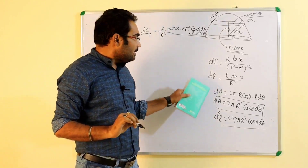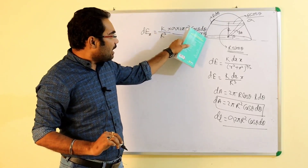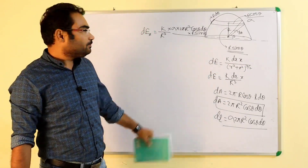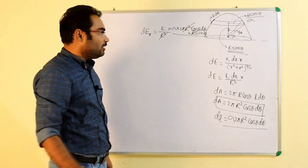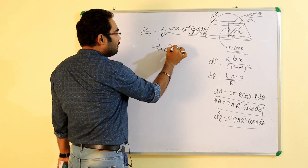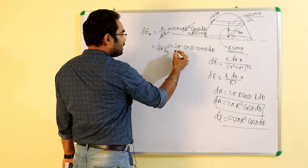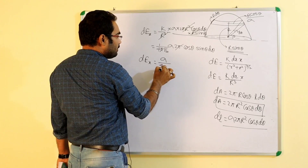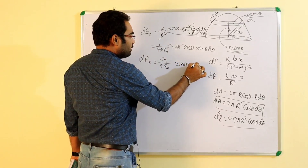Sara term likh chuke hain hum log: k into dq ke jagah pe sigma into 2π R² cos θ dθ, x ke jagah pe R sin θ, aur neeche R³. To R³ yahan se cancel out ho jayega. k ke jagah pe 1 by 4π ε₀ likh sakte hain. To yeh π se π cancel out ho gaya. dE ka jo value aayega: sigma by 4ε₀ into 2 sin θ cos θ dθ, jo sin 2θ dθ ke roop me likh sakte hain.